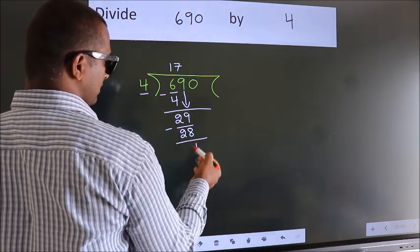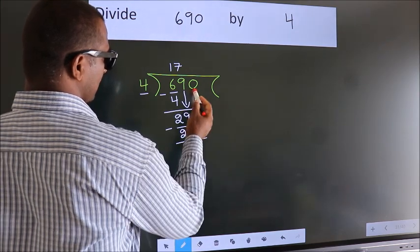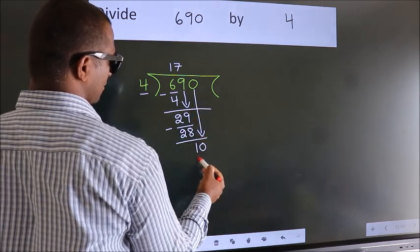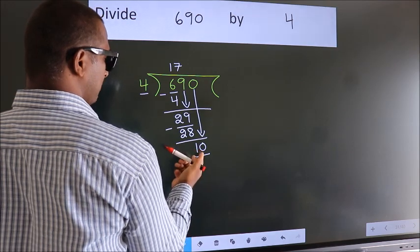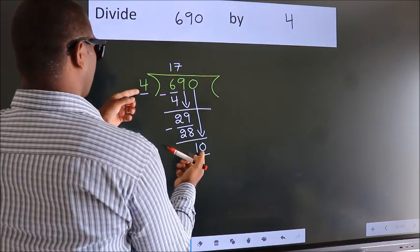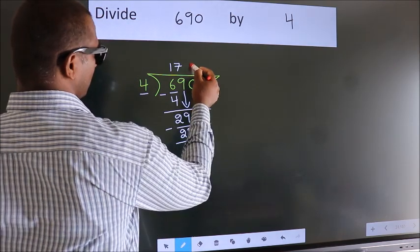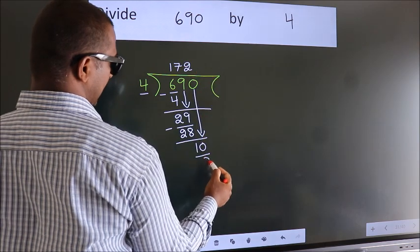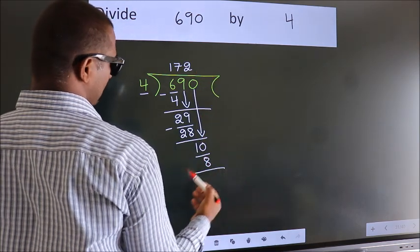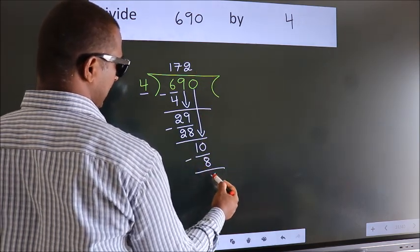After this, bring down the next number. So 0 down. We have 10. A number close to 10 in the 4 table is 4 twos, which is 8. Now we subtract. We get 2.